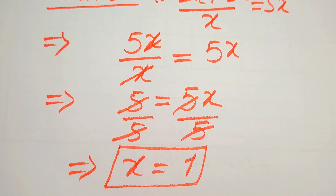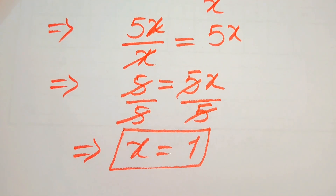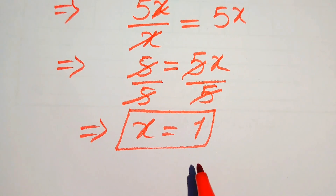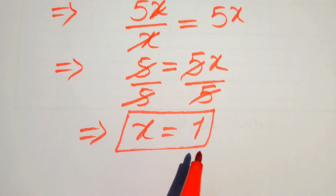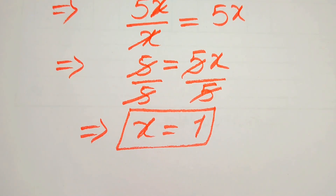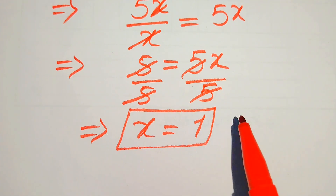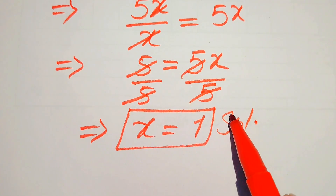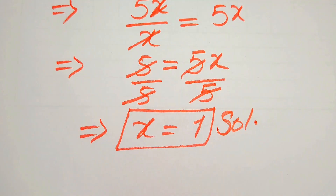So x equals 1 is the final value of x in this question. We already verified this value in the first method, so x equals 1 is the solution of the given equation. This is the final answer. Thank you so much for watching this video — please subscribe to my channel for more exciting videos.